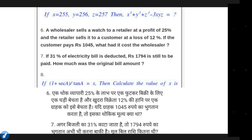The next question: if 1 plus cot²a equals x, then calculate the value of x. In trigonometry, you can change sine and cosine values. Since 1 plus cot²a equals cosec²a, you can solve this method easily.